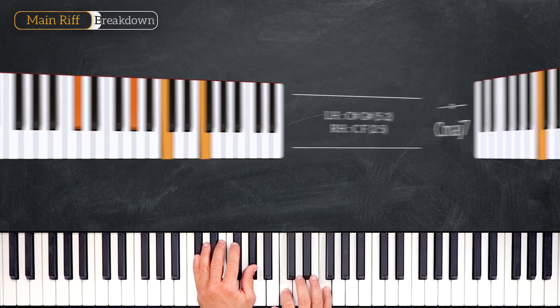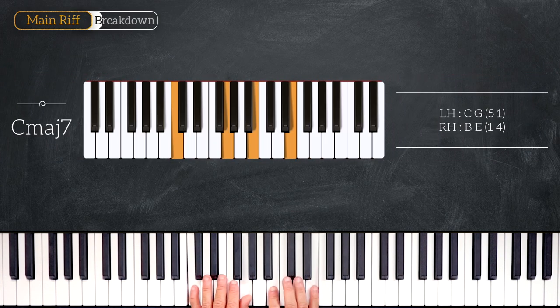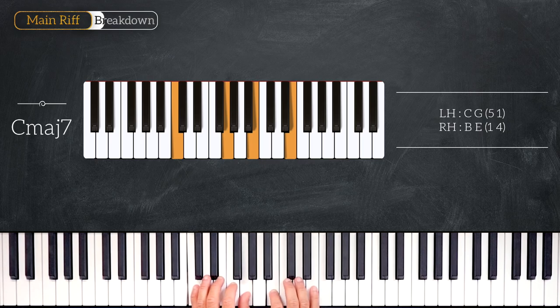Then we go down a half step again, which gives us a C major 7, C, G, B, E.